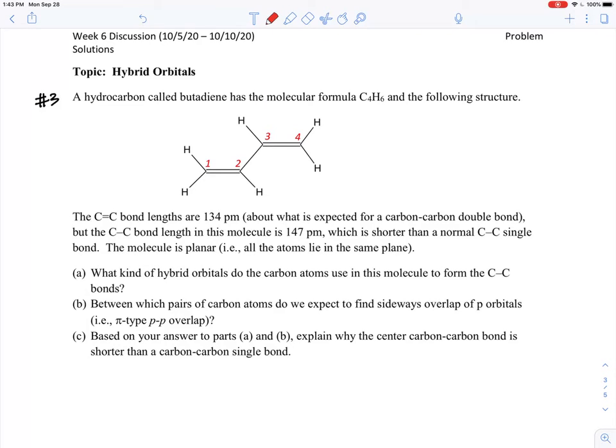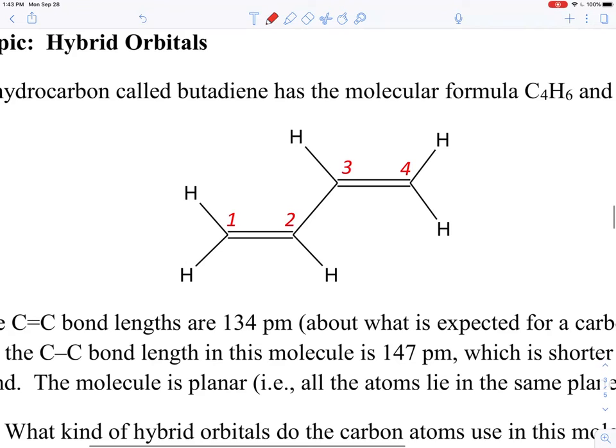This is topic number three of week six, which continues to talk about hybrid orbitals. The compound we are dealing with is called butadiene. Buta means there are four carbons, di means two, ene means double bonds. So this is a compound with two double bonds. This is a four carbon and six H, and this is how the structure looks like in organic chemistry.